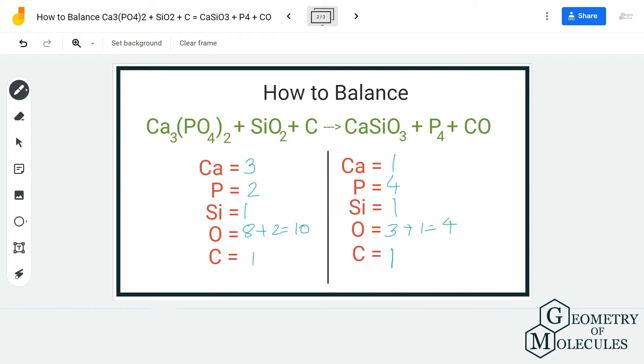We are going to start with phosphorus atom because we have two on reactant side and four on product side. So basically we just need to multiply this by two, and for that we add a coefficient two over here.